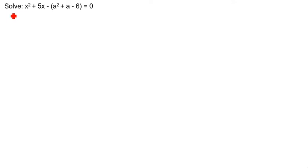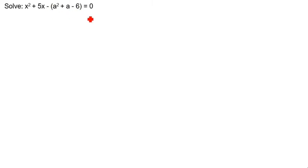Today we are going to learn quadratic equation solving. The problem is: x squared plus 5x minus (a squared plus a minus 6) equals 0. So, how will we solve this one?